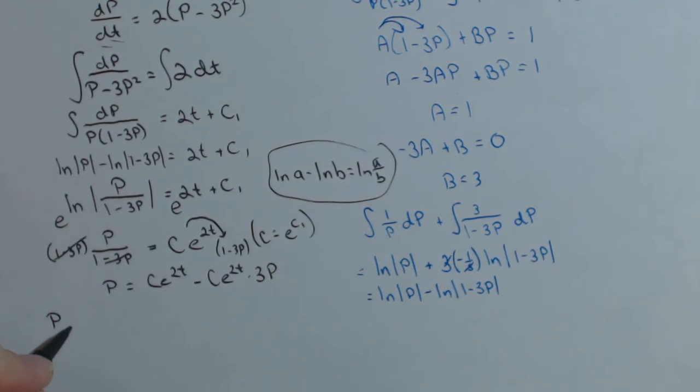So I'm going to add this over to this side, and I'm going to put the 3 out front just to make it a little easier to look at. So 3ce to the 2t times p equals ce to the 2t. We're almost there. The reason we did that is because now the p can be factored out on this left-hand side. And we get p times 1 plus 3ce to the 2t equals ce to the 2t.